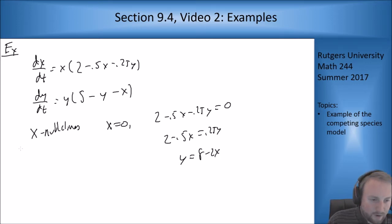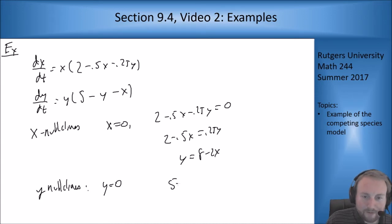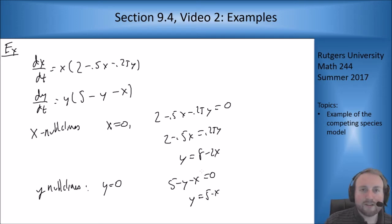For the y nullclines I get y equals 0, or I get 5 minus y minus x equals 0, which gives y equals 5 minus x. Let's go ahead and graph these and see what we get from there.